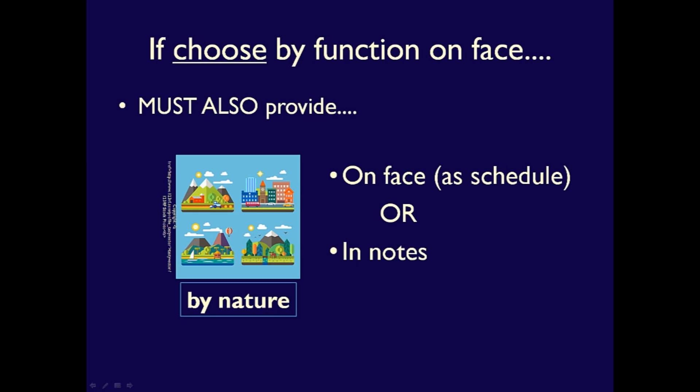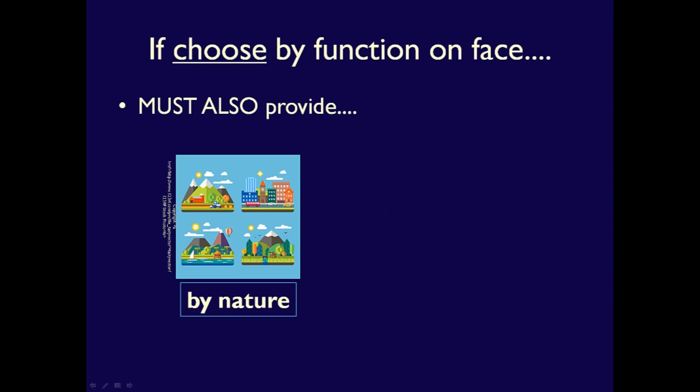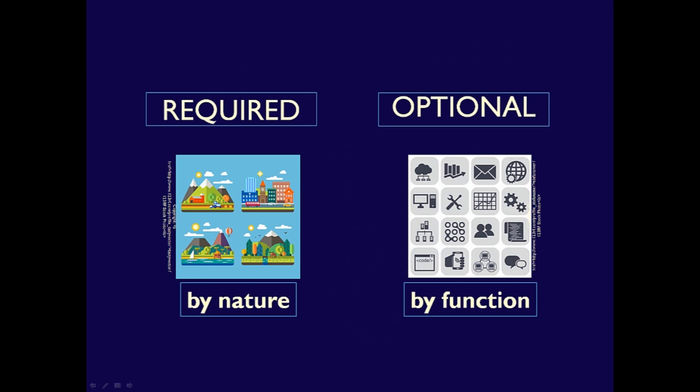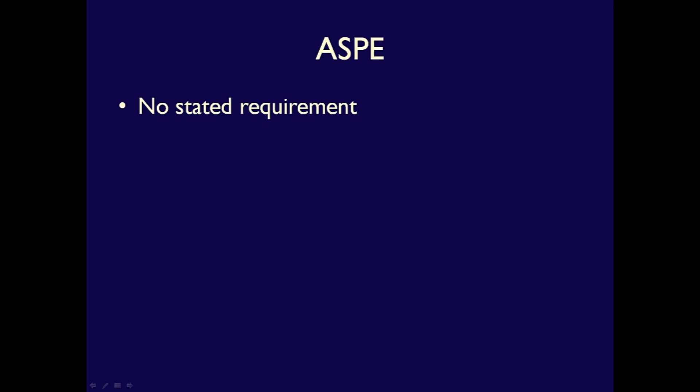What does IFRS say? IFRS states that when an entity chooses to report their expenses by function, they must also provide the same information by nature. At a minimum, businesses reporting their expenses by function must also disclose the following, either on the face of the statement or as a note: cost of inventory charged to expenses, employee benefit costs, and depreciation and amortization costs. This means that information by nature is required, while information by function is optional.